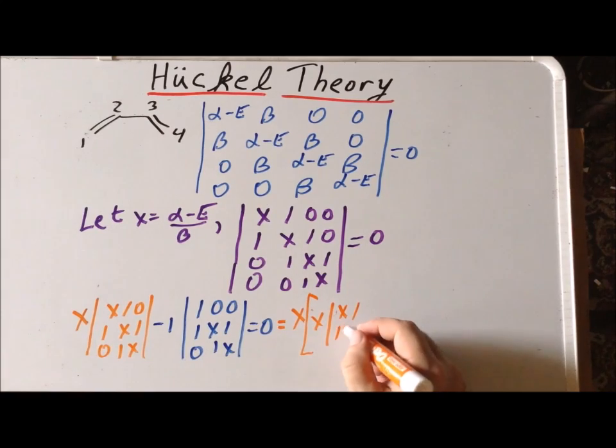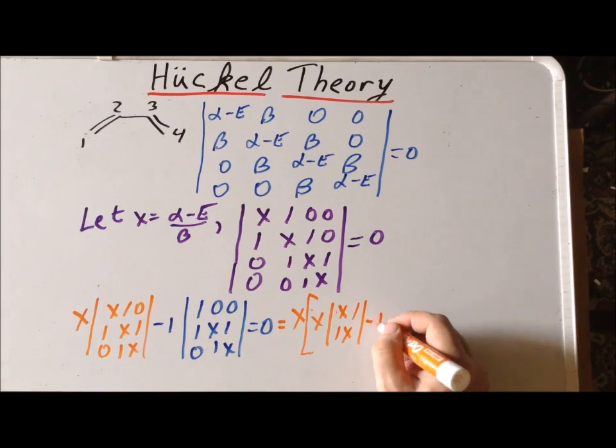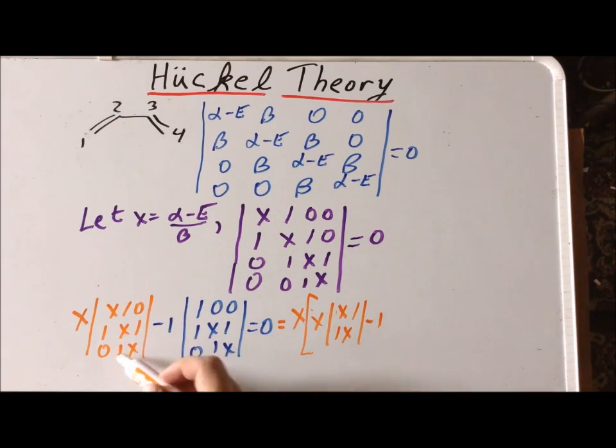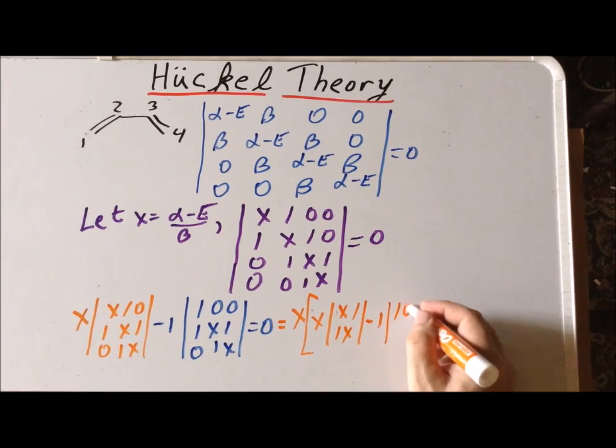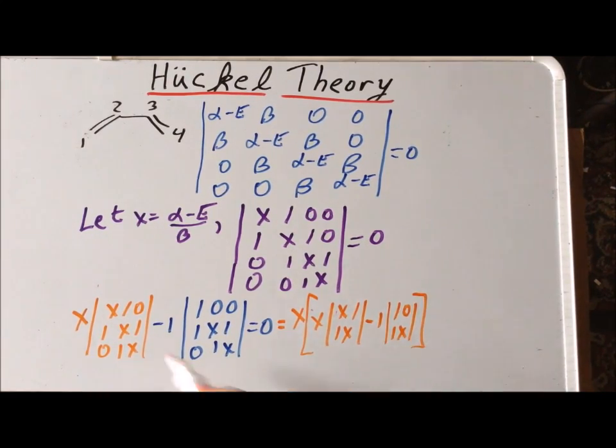And then our second coefficient is going to be the minus 1, and it multiplies 1, 0; 1, x. So, in orange, we have here the expansion by minors of the terms we have in orange there. And then in blue, we can evaluate this particular expression.